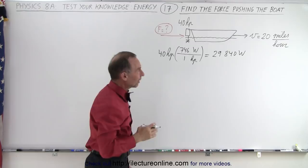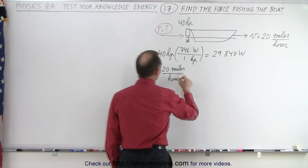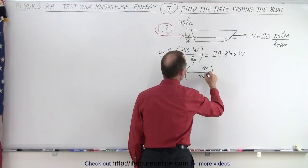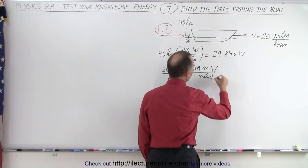How about the velocity of the boat? Well, we can say 20 miles per hour. We can convert first miles to meters. So we need meters here, we need miles in the denominator. One mile is 1,609 meters.